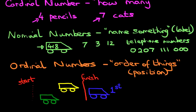What about the next one? We've got the yellow car, and the yellow car is going to finish second. It is second in the race, and that's how we write second — the number 2 with 'nd'. And lastly, we've got the green car, and the green car is in third place. So this is how we write it: first has 'st', second has 'nd', and third is the number 3 with 'rd'.